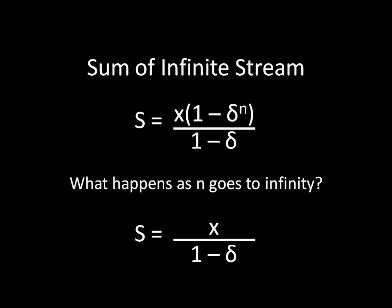You take the original payoff, the payoff that you get every single stage, and you divide it by one minus delta. And that is the sum of an infinite stream of those payoffs.